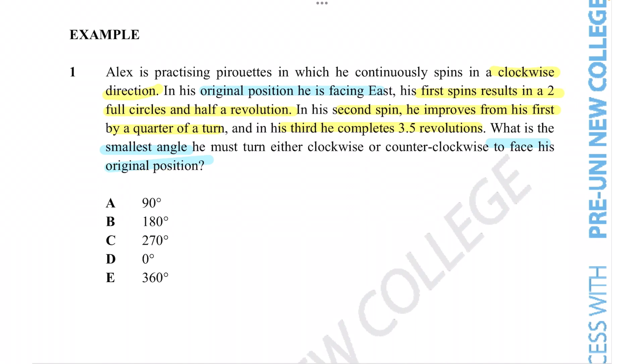That is a lot of information, so let's start off by drawing out our diagram. The first step would always be to draw out the compass direction. Again, using our handy mnemonic, Never Eat Soggy Weet-Bix, we fill in the directions of the compass. Now starting off, we are told that Alex is actually facing east. Let's make note of that.